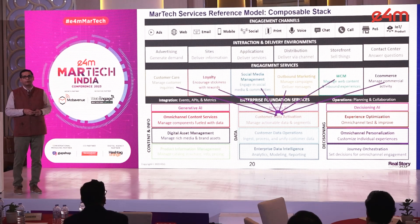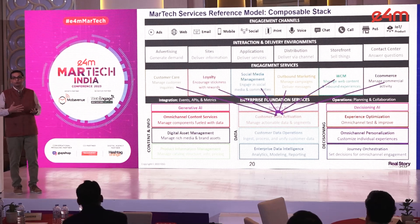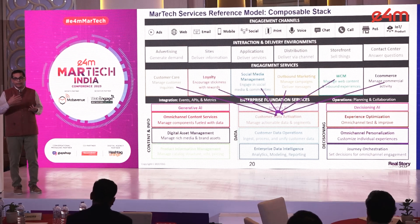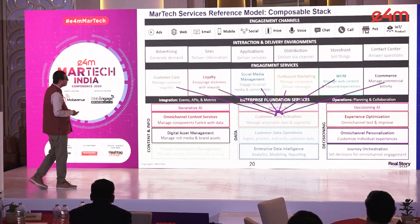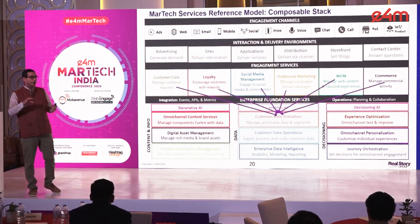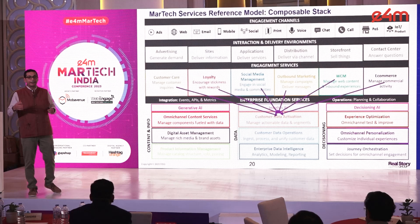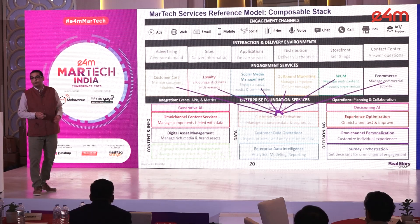Customer data platforms are getting popular — they abstract all data functionality away from individual products, placing all customer data in a single place where you do segmentation and export segments to all channels. Similarly, journey orchestration platforms help you orchestrate your campaigns or journeys across multiple channels, so you don't need a campaign palette for each platform, like the one we saw in the Mailchimp screenshot.